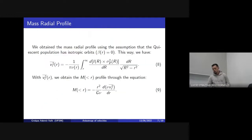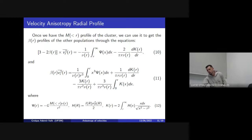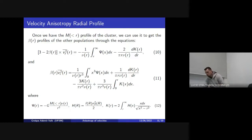Using this and the hypothesis that the quiescent population has isotropic orbits — that means the beta profile is zero — we can derive equation 8. Using this equation we can get equation 9, which gives us the mass profile for the cluster. Using these mass profiles we can then get the beta profile for the other three populations.